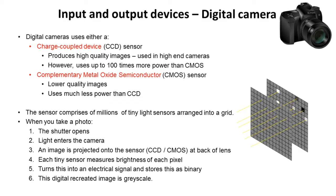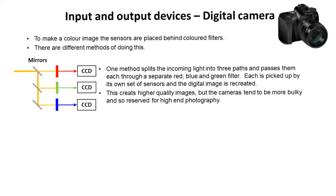So how do we take an image and turn it into a digital format with a digital camera? The sensor itself comprises millions of tiny light sensors arranged in a grid. When you take a photo, the shutter opens and light enters. An image is projected onto the sensors at the back of the lens, and each tiny sensor measures the brightness of each pixel. It turns this into electrical signals and stores it as binary. Importantly, the image stored at this stage is a grayscale representation of the picture taken.